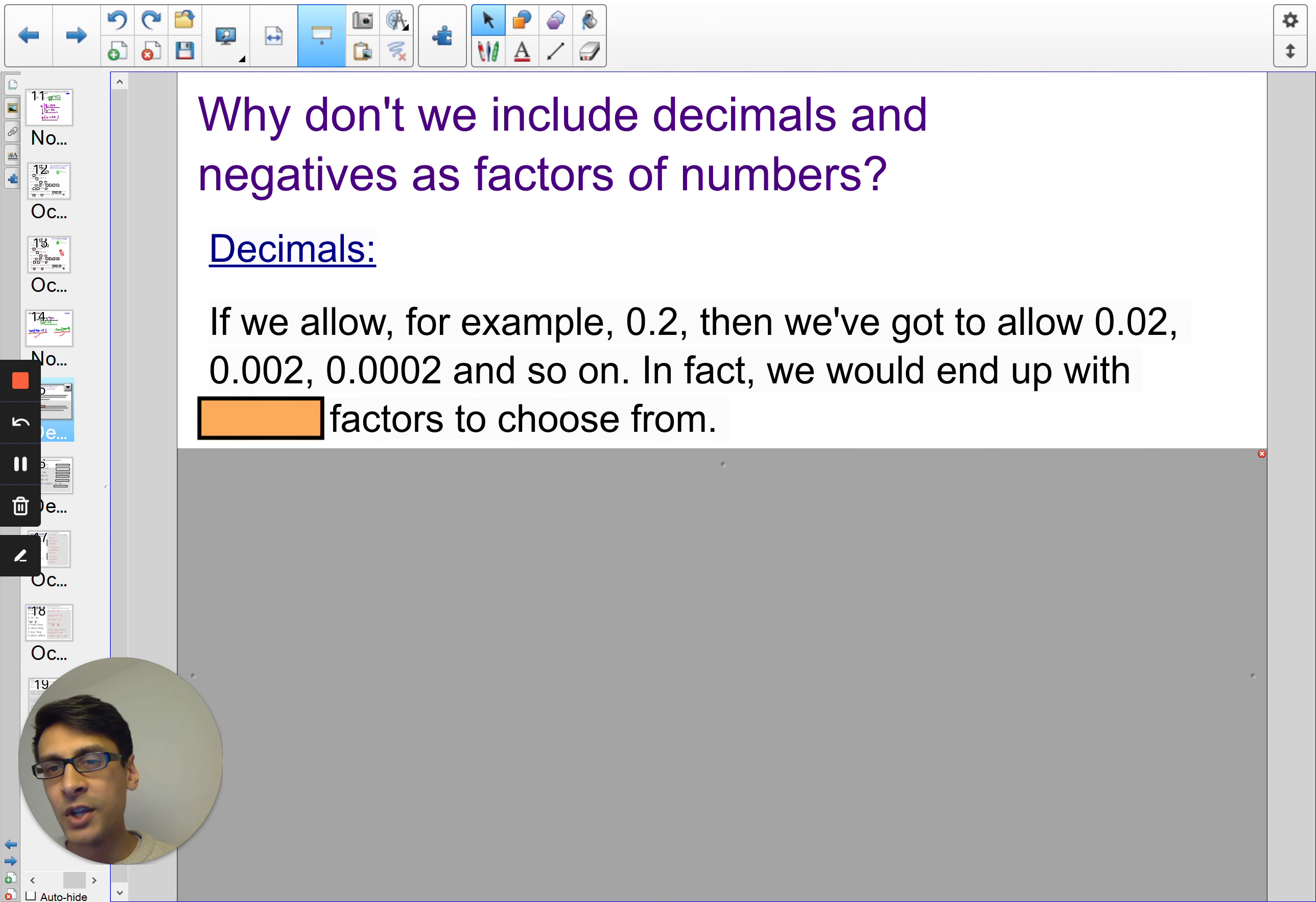So we don't have to include decimals. And when it comes to negatives, negatives would double the amount of factors that we have. So, in fact, some mathematicians say that we should include it. But for convention, we don't.